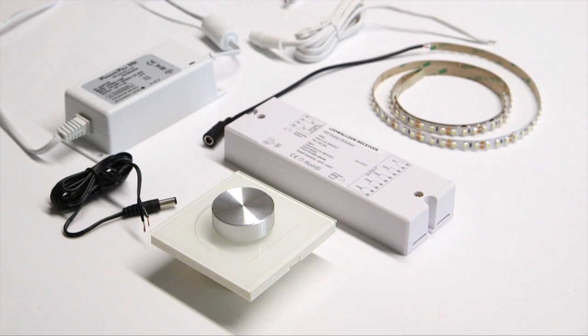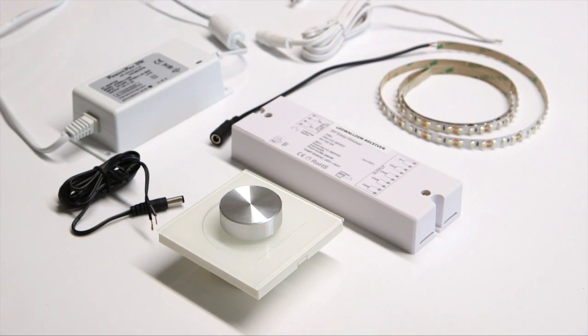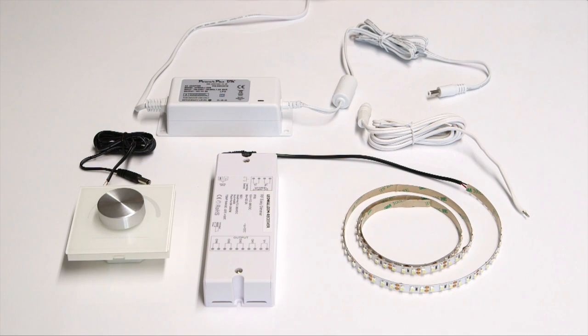We supply the receiver separately as it is possible to pair multiple receiver units to just one of the wall controllers which enables you to power a large amount of LED strip in multiple locations if required. The wireless wall controller unit is battery powered so can be mounted literally anywhere without having to run wires to it.